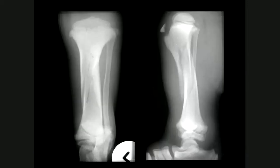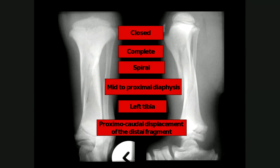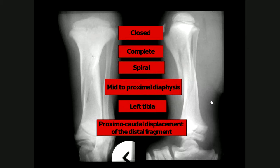Here are orthogonal views of a skeletally immature animal to practice fracture description. The answer: it is a closed fracture — no gas, no soft tissue loss, no marked bone destruction. It is a complete fracture extending through both cortices. It is a spiral fracture involving the mid to proximal diaphysis of the left tibia, with proximal cranial displacement of the distal fragment relative to the proximal fragment.